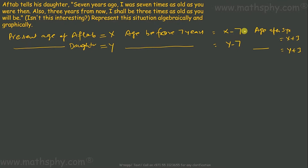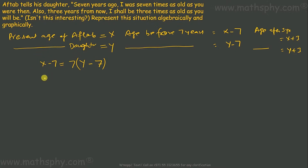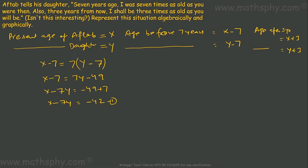Seven years ago, Aaktaab's age was seven times more than the daughter's age, meaning X minus seven equals seven times Y minus seven. If I multiply the daughter's age by seven, both ages become equal — for example, if daughter's age was 10, Aaktaab's was 70, and 10 times 7 equals 70. This gives X minus seven equals 7Y minus 49, so X minus 7Y equals negative 42. That's the first equation.